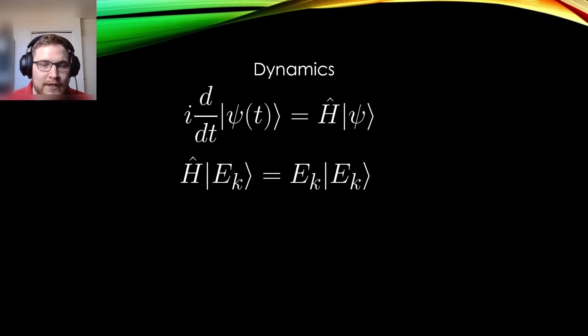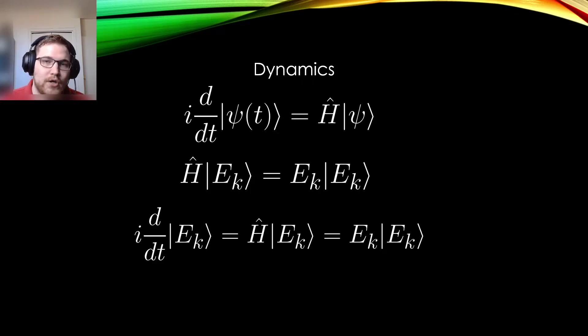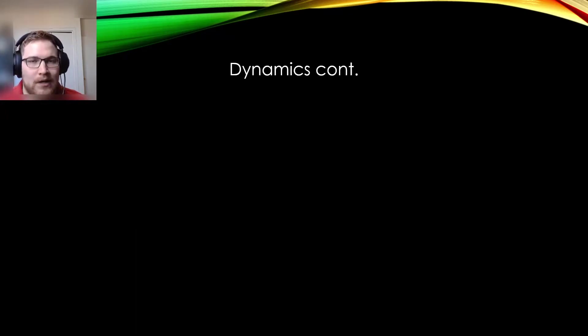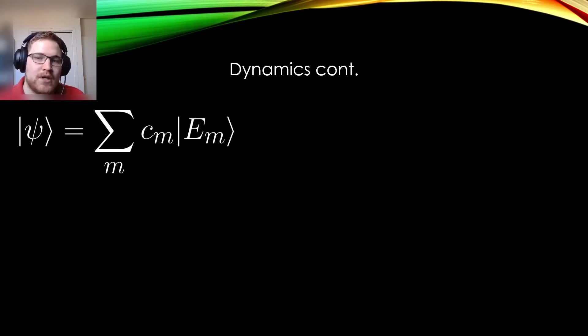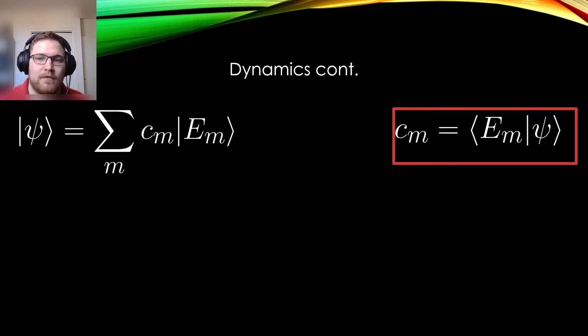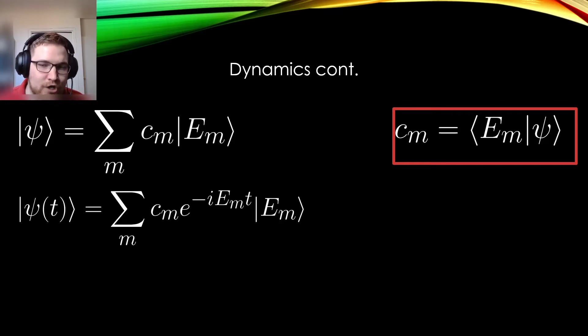Doing so allows us to know that the eigenvectors, when plugged into the Schrodinger equation, just pick up a phase in time depending on the energy they correspond to. Now to a more general situation with some generic state psi. We can decompose psi in terms of the energy eigenbasis, where Cm is given by the inner product of the energy eigenvector labeled by M and psi itself.